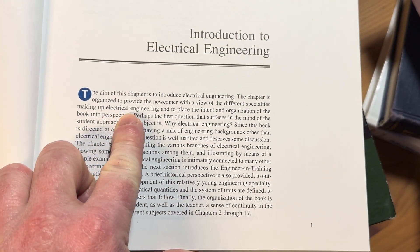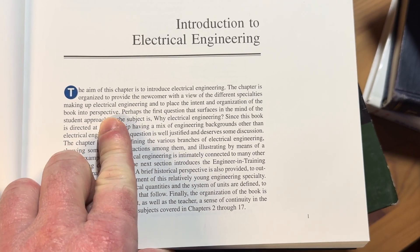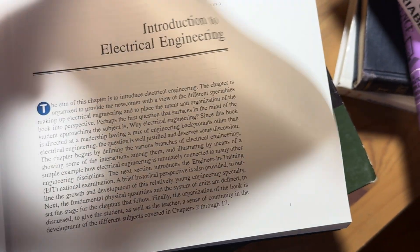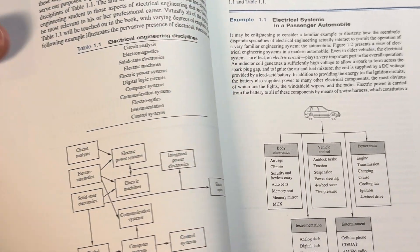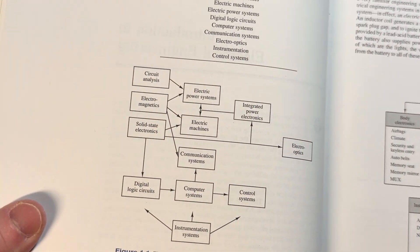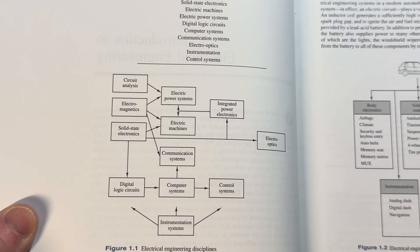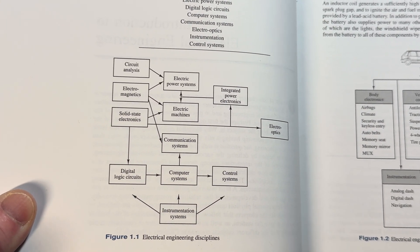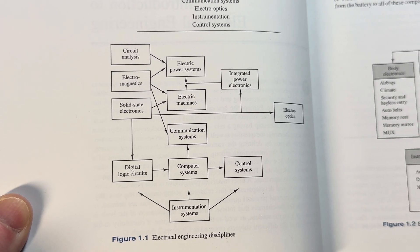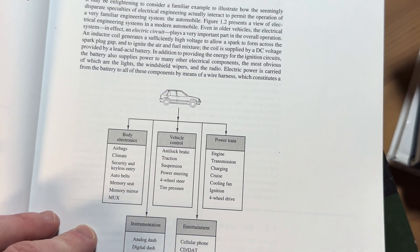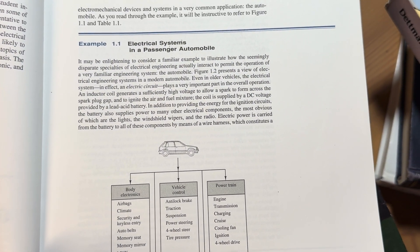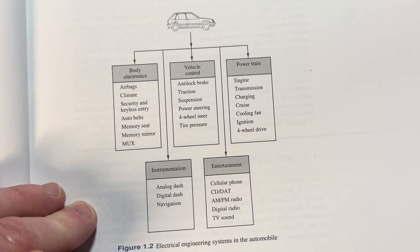So the aim of this chapter is to introduce electrical engineering. It talks about the disciplines here. It gives you an overview of everything. The electrical engineering disciplines. And then over here we have electrical systems and a passenger automobile.